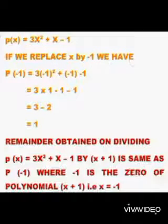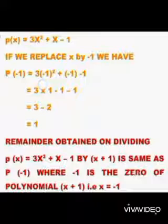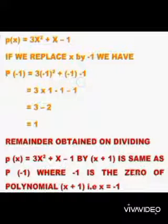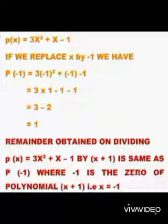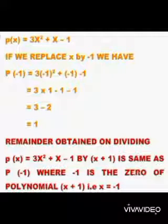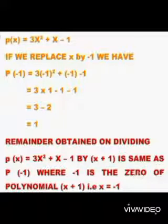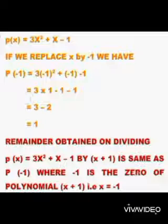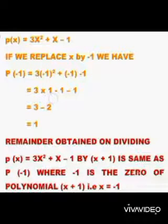We have P(-1) = 3 × (-1)² + (-1) - 1. Here we have replaced -1 in place of x. So (-1)² is 1, and 3 × 1 is 3, plus (-1) is minus 1, minus 1.